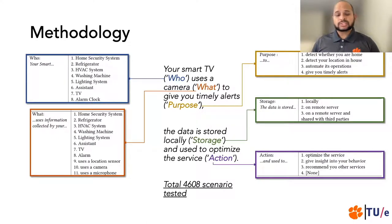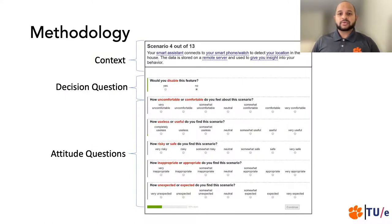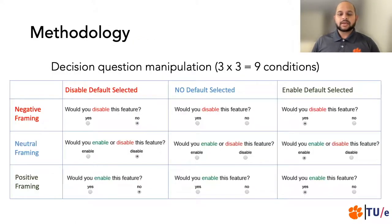We tested 4,608 scenarios this way. This is how our participants saw the experimental conditions. They read the scenario and answered two types of questions: first, whether they would enable or disable this scenario, which is a behavioral question, and five more questions about their attitudes towards these scenarios, such as comfort, appropriateness, and risk. The defaults and framing were manipulated specifically for the decision question, and both had three different levels. Defaults were manipulated as enabled by default, disabled by default, and no default. Framing was manipulated as positive, negative, and neutral.